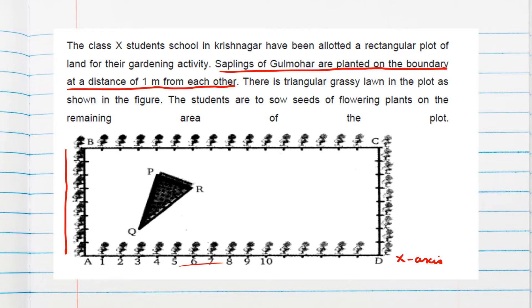So these are the information. These saplings are at 1 meter, 1 meter distance, that means 1 unit we can take. Numbering are also given and PQR is a plot. Now we come to the questions.